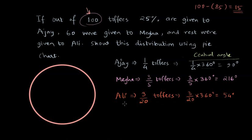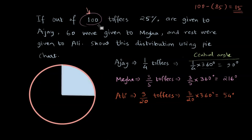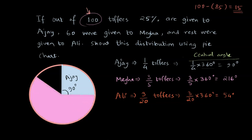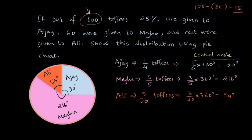Now that we have all the central angles, we can draw the sectors. Let's draw the sector for Ajay's toffees in light blue, fill it in, and mark the angle as 90 degrees. For Megha, who got the most toffees, the central angle is 216 degrees — an obtuse angle — and we draw this sector in pink, labeling it 216 degrees and writing Megha's name. The remaining sector belongs to Ali, with a central angle of 54 degrees, drawn in orange.